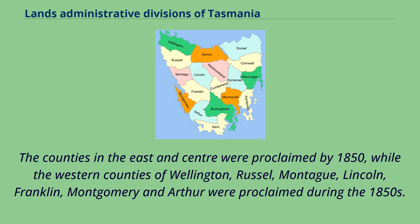The counties in the east and center were proclaimed by 1850, while the western counties of Wellington, Russell, Montague, Lincoln, Franklin, Montgomery, and Arthur were proclaimed during the 1850s.